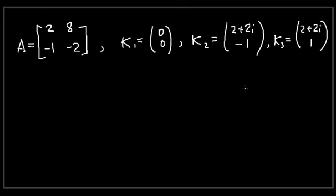I must apologize — I used square brackets for the matrix A and round brackets for the column vectors k. This is inconsistent; I should have used either square brackets or round brackets in both cases. I'm not going to change it now, but for the next things we write down we're going to use square brackets in all cases.